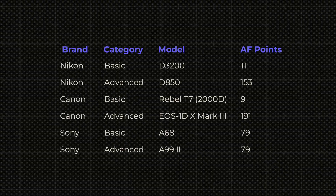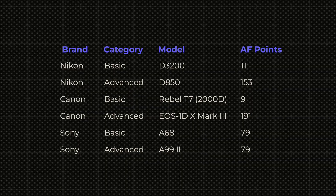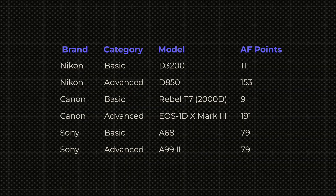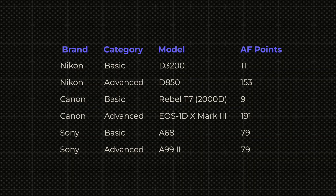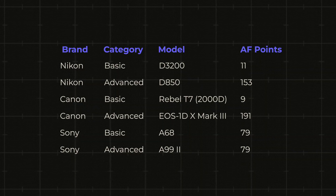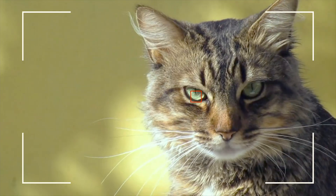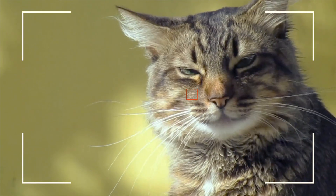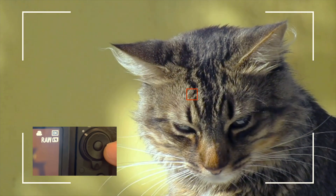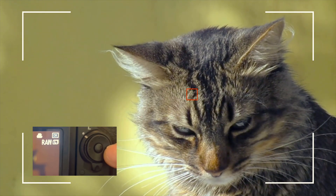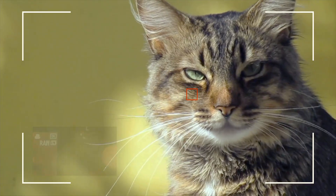As you would have guessed, these messengers are our AF points. Different camera bodies have different numbers of AF points. Naturally, more AF points means more flexibility and precision in focusing, and this is especially useful in dynamic scenes where there is a lot of movement. The idea is to choose the AF point closest to the side of the frame where your subject is, and we do this using the joystick or the multi-selector button on the camera.